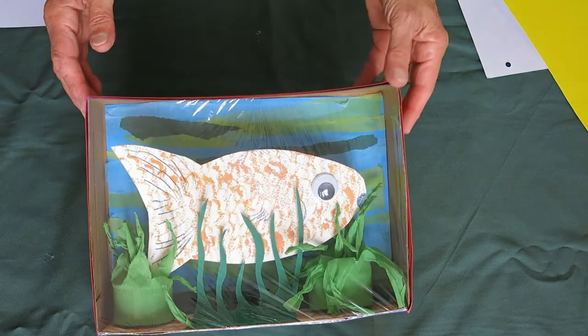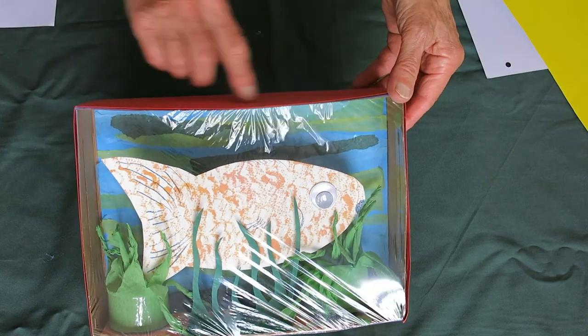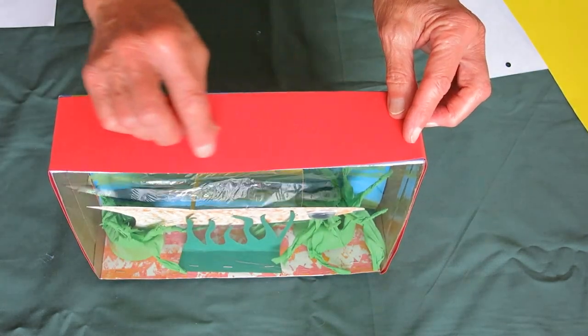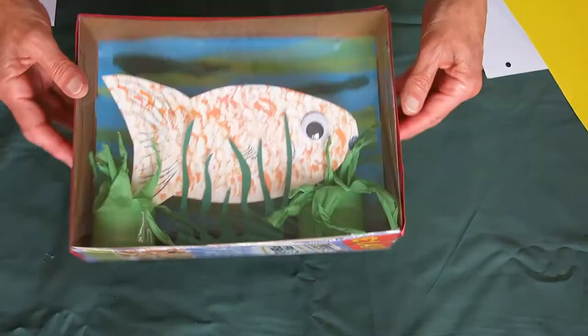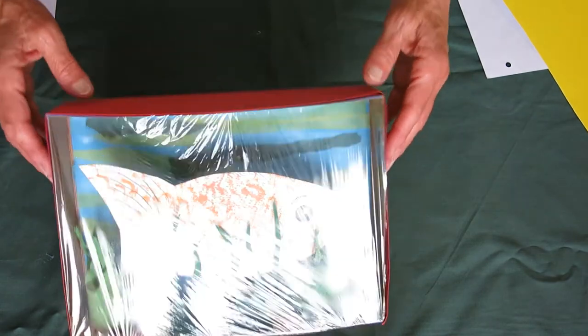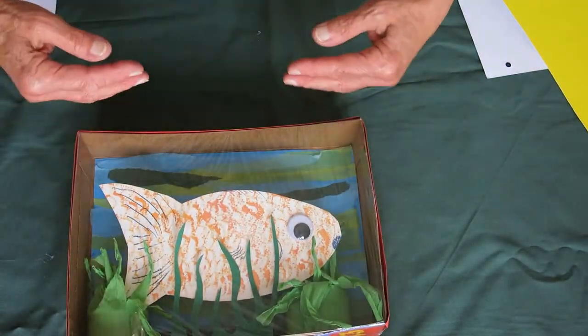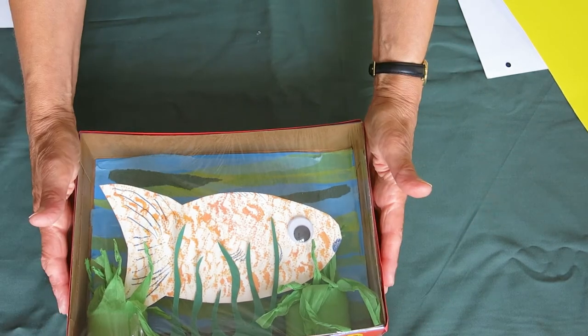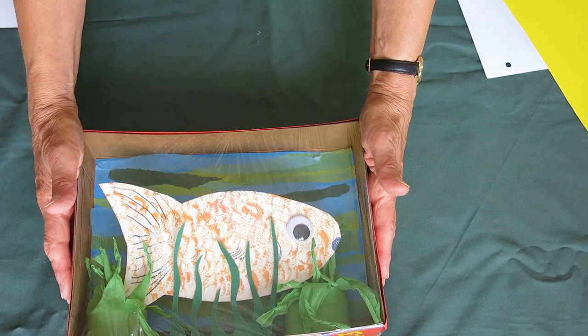When you've got your case ready, you need to take some cling film. And if you pop some double-sided tape at the top and the bottom of your box first, and just stretch the cling film over, and then wrap it round the sides as well and stick it.